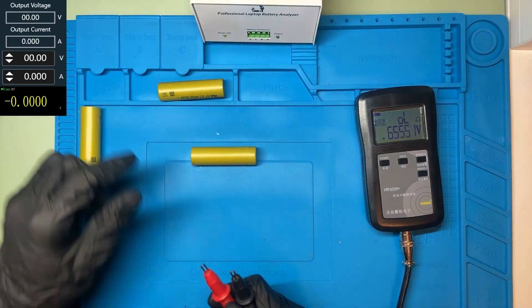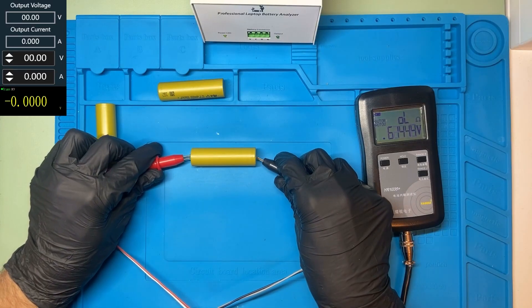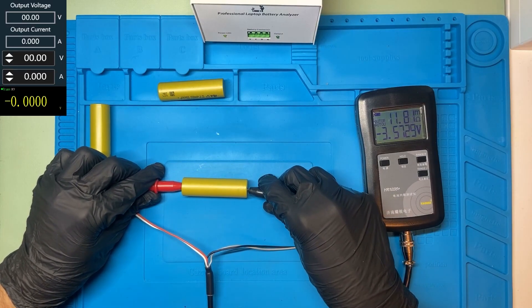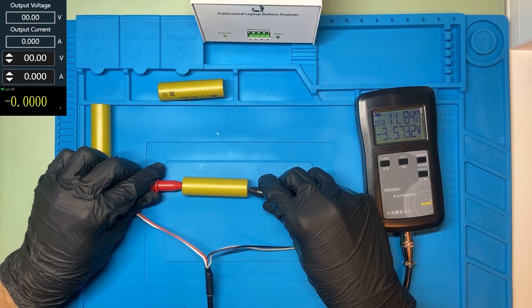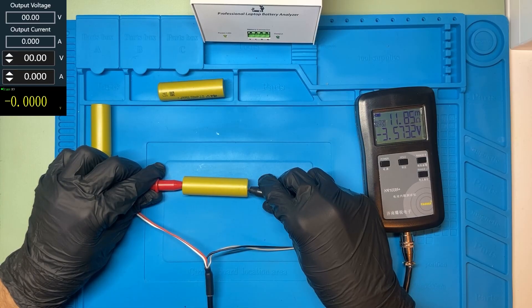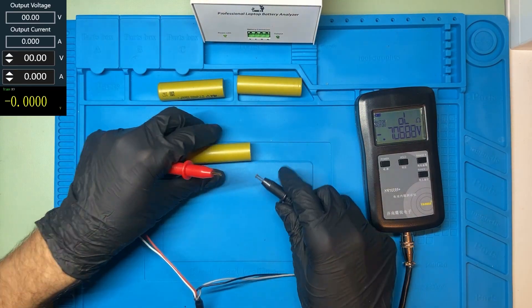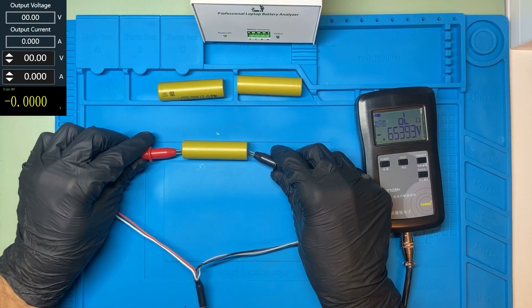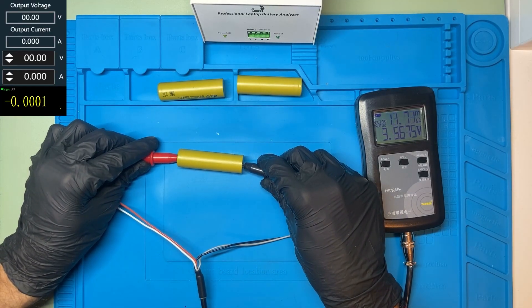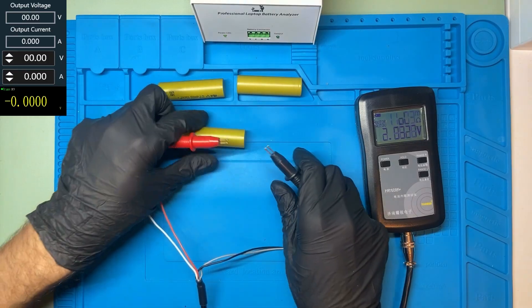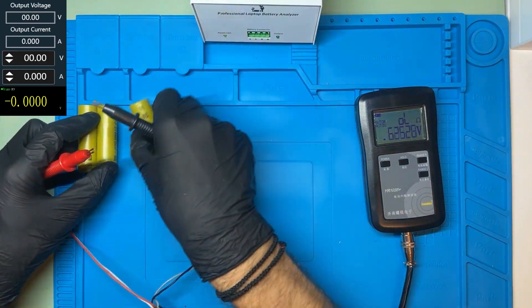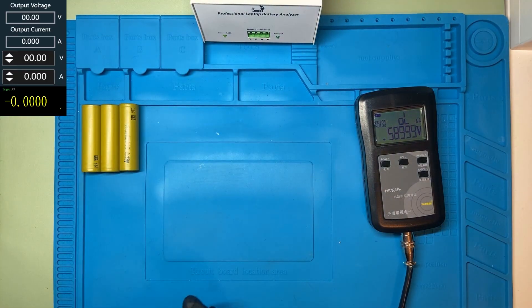The next one. These cells should be balanced and have almost the same internal resistance. Look. 11.7 milliohms. 11.8 milliohms. 11.7 milliohms. Very good. The cells are very well balanced and have the same internal resistance.